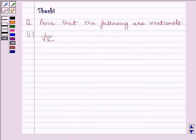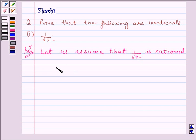Let us now start the solution. Let us assume that 1 upon root 2 is rational. Now put 1 upon root 2 equal to A upon B.